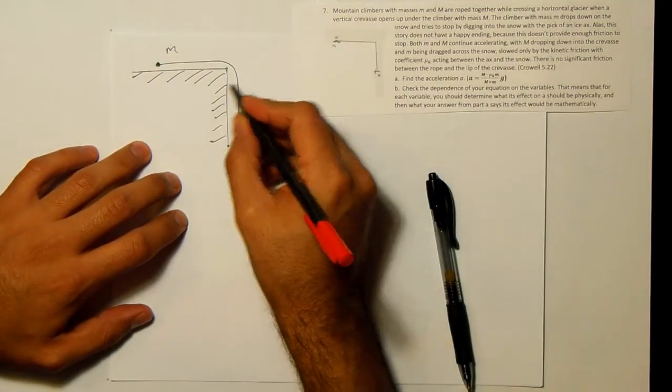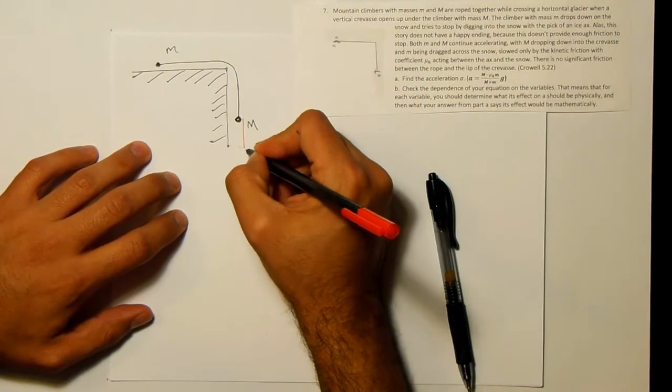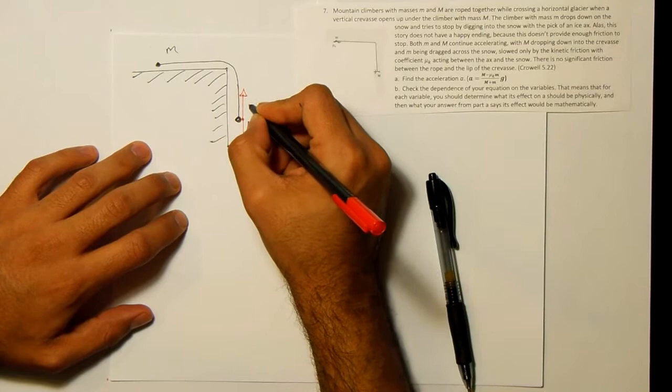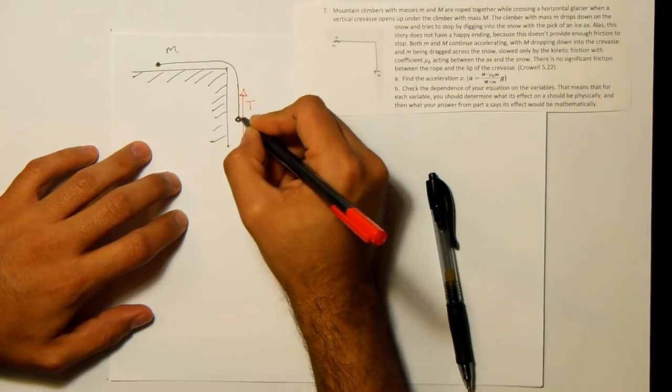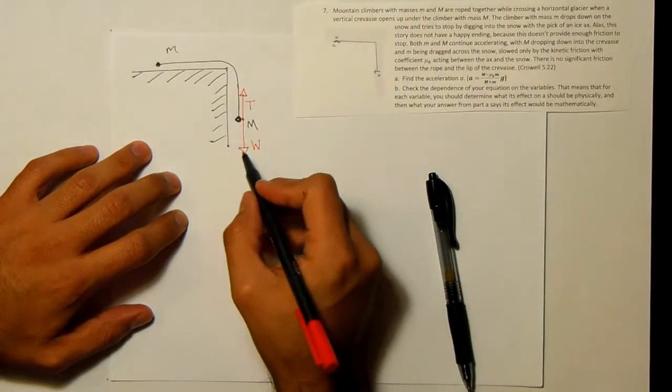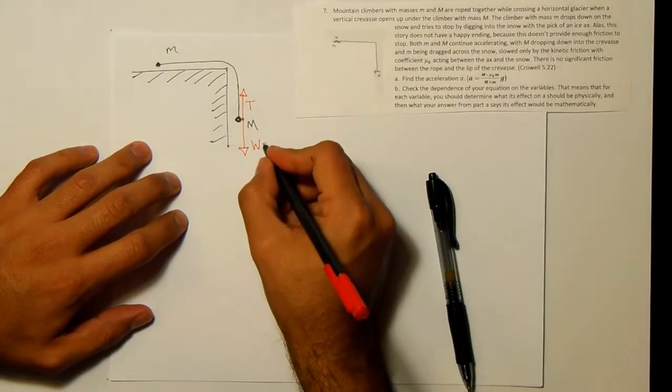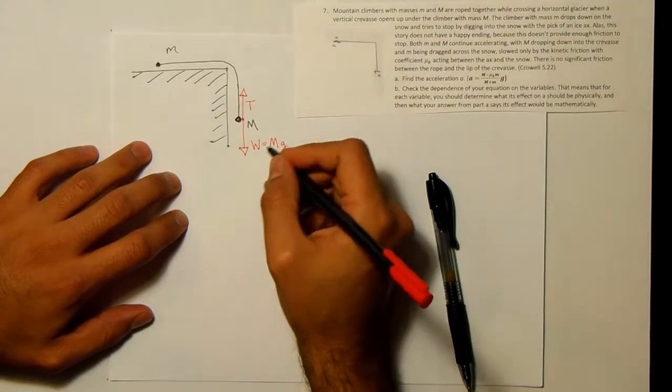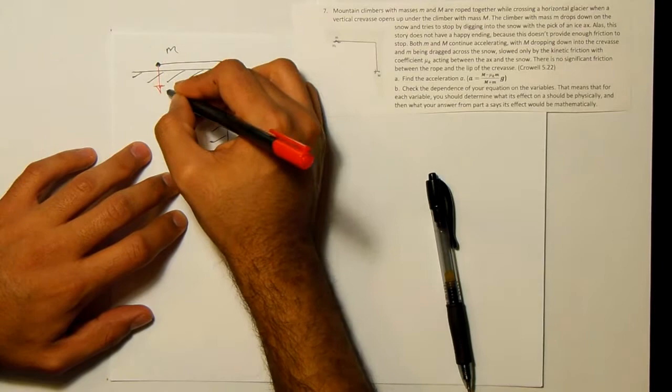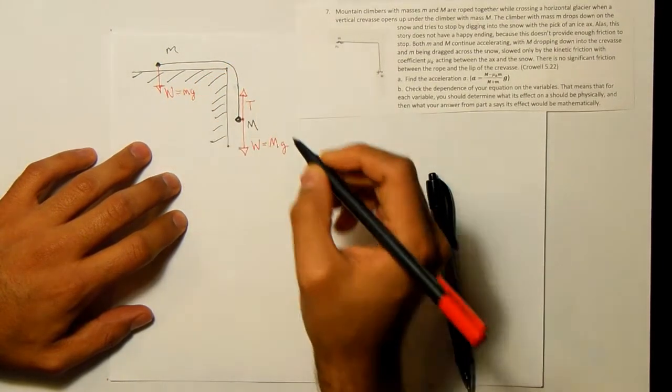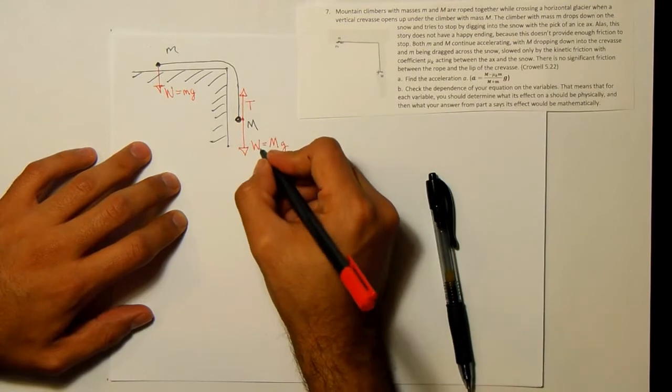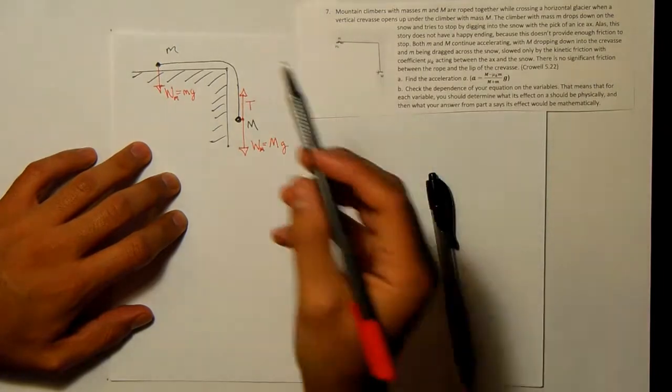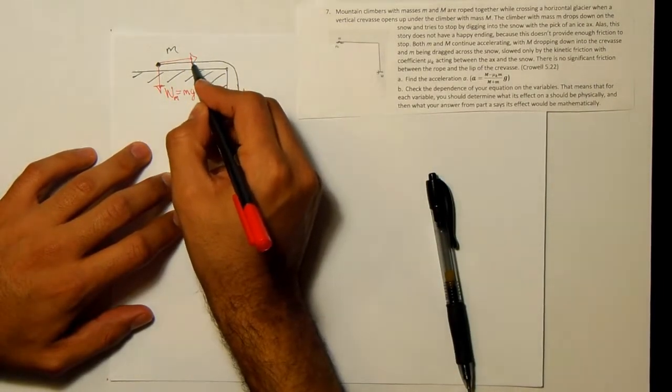So on the guy that's hanging over the cliff, big M, there's two forces that are acting, which are the weight and the tension in this rope, not a normal force, a tension. And the weight of this guy is going to be big M times g. And the weight that's on the little m is going to be little m times g. And if I want to make them different, maybe I'll add a little big M and little m down here just to be clear about which one is which. But what is the same is the tensions that they experience are going to be the same.